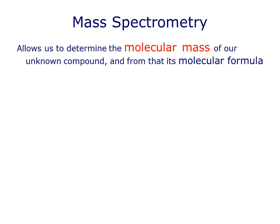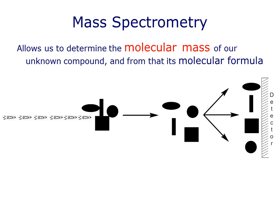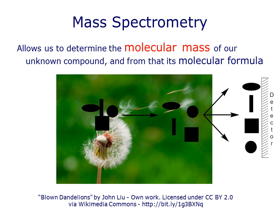Finally, mass spectrometry, which is a little different. Note that the word is spectrometry rather than spectroscopy. Mass spec involves bombarding a sample with a high-energy beam of electrons, or similar, to generate ions, then accelerating these ions through an electric field and watching as the ions fragment. It's a little bit like the molecular equivalent of blowing on the seed head of a dandelion, and effectively allows us to weigh individual molecules, and thus determine the molecular mass of unknown compounds. We will talk more about mass spec in lectures this week as well.